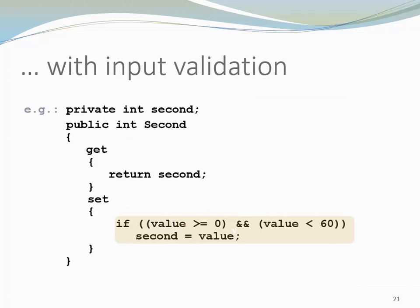Here we have an example of a property that performs input validation. We have a property called Second and Second models the seconds of a clock. So my possible values are anywhere between 0 and 59. When we return the value here in the body of get, we just return whatever value is stored in our backing field second. However, when we accept a new value, when the user chooses a new value, we want to make sure it is anywhere between 0 and 59. If that is not the case, then we just don't assign it to our backing field.